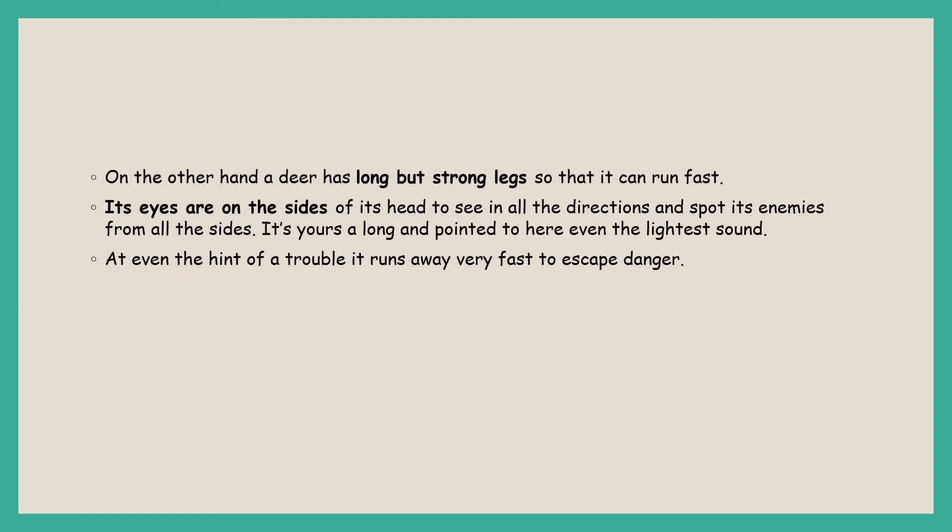The deer, which is a prey, has long but strong legs so it can run very fast. Its eyes are on the sides — unlike the lion whose eyes are in the front to focus on prey — so that it can see in different directions and protect itself from any upcoming danger. At even the hint of trouble it runs very fast to escape danger.